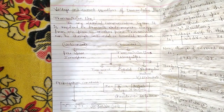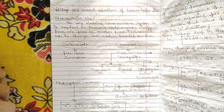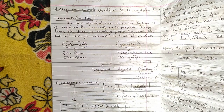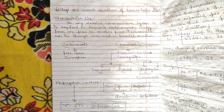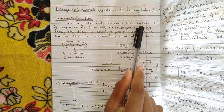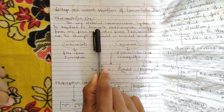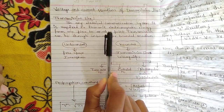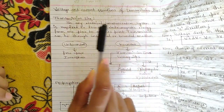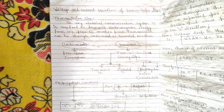Before knowing the voltage and current equations, you need to know what is meant by transmission lines and how they are responsible for passing microwave frequencies and signals. In any electrical communication system, it is required to transmit electromagnetic energy from one place to another. Transmission can be through a bounded or unbounded medium.